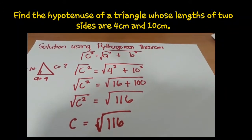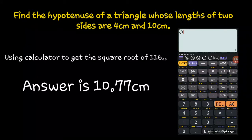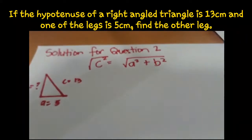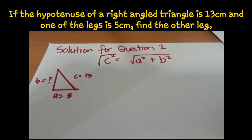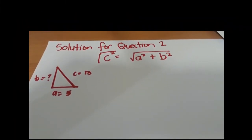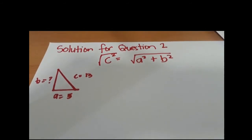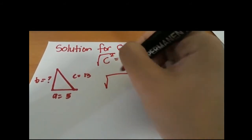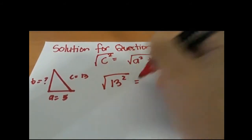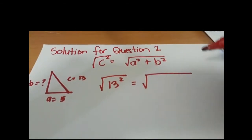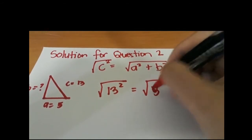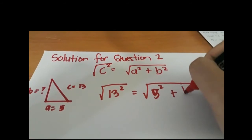Use your calculator to compute the square root of 116 because this is not a perfect square. Let's work on question 2. The missing side is the hypotenuse, so we will still be using the Pythagorean theorem. By direct substitution, we have 13 squared is equal to 5 squared plus b squared.